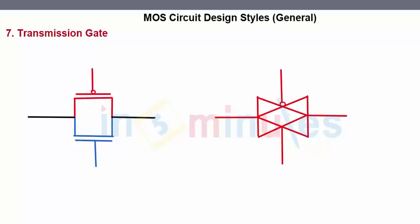Transmission gates are a PMOS and an NMOS connected in parallel to each other. This is my PMOS and this is my NMOS. They are both connected in parallel, and this is my input and this is my output.